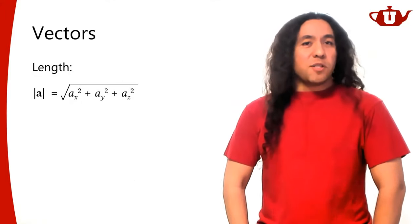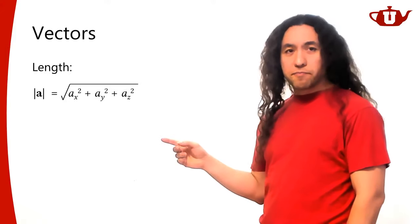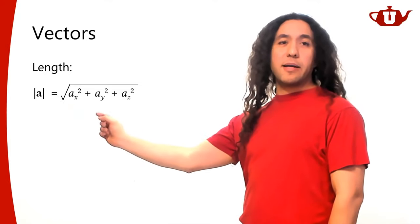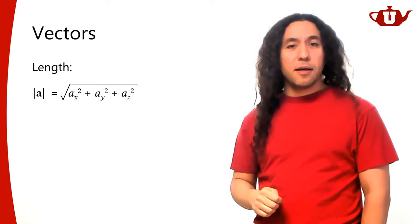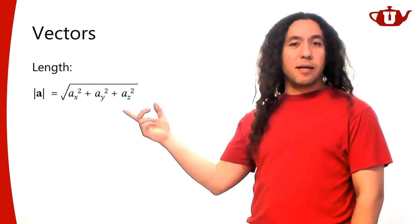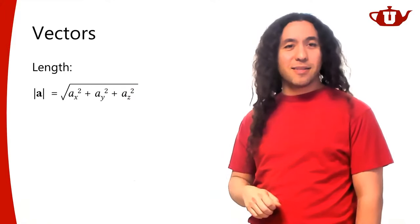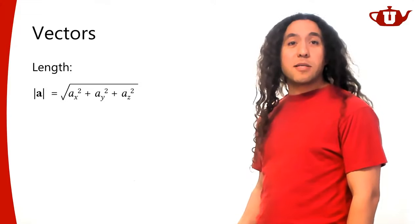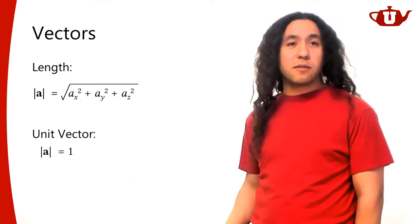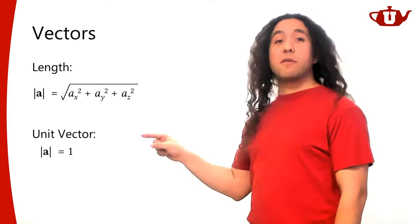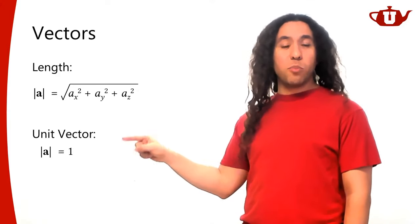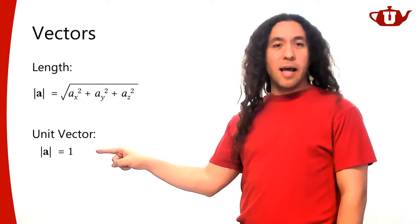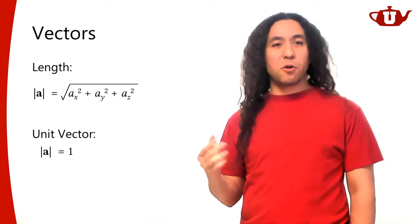One of the first things about vectors is the length of a vector. The length is the square root of AX squared plus AY squared plus AZ squared — this comes from the Pythagorean theorem. A very important concept is the unit vector, which is a vector that has a length of one unit.